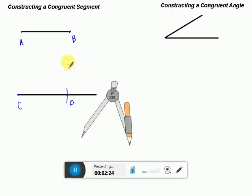And guess what? A, B will be congruent to C, D because they have that same exact radius. So, that is how you construct a congruent segment.